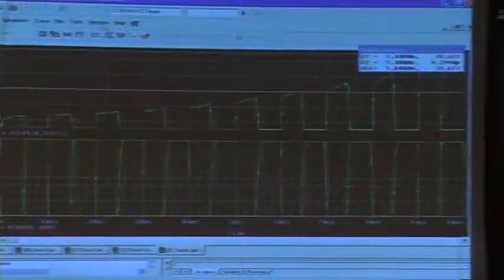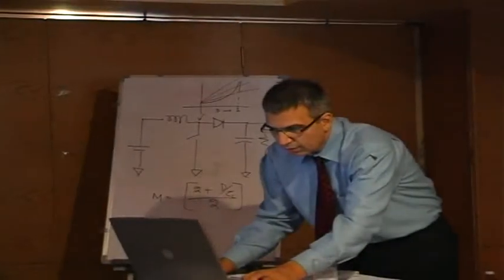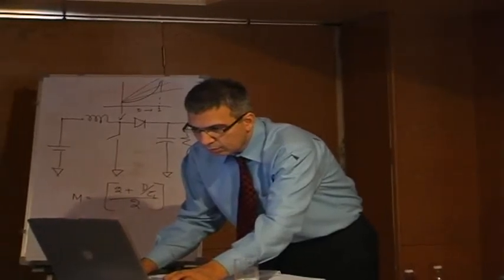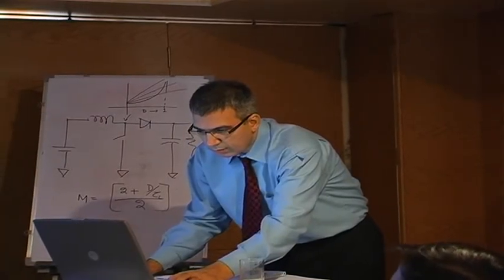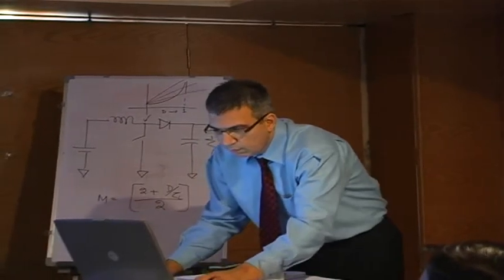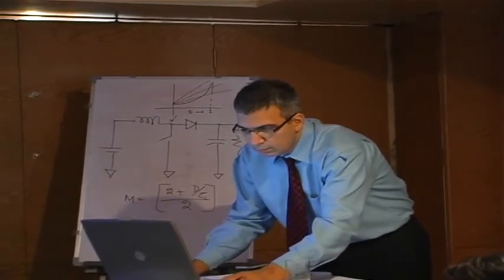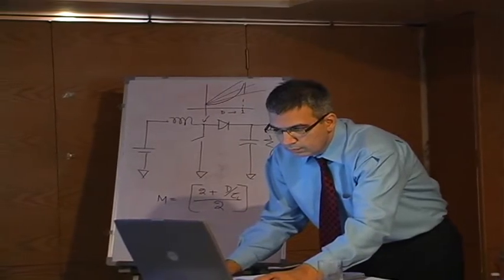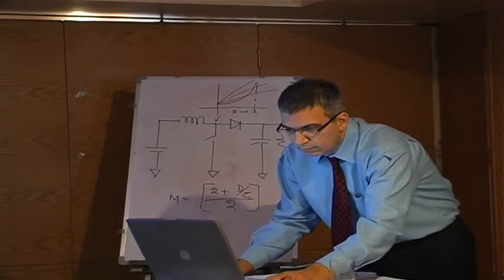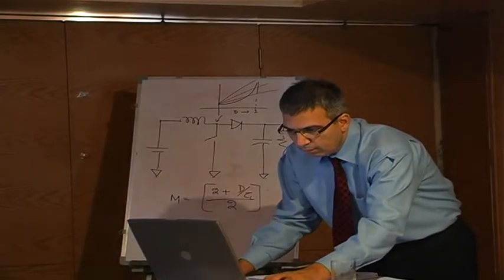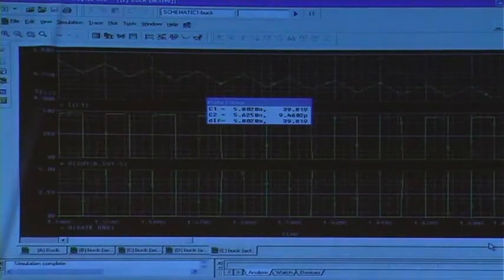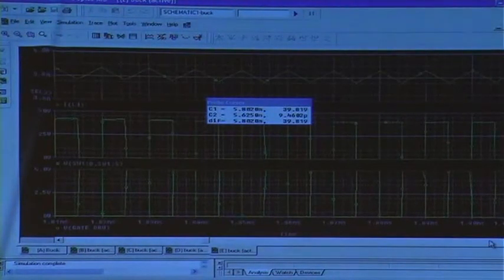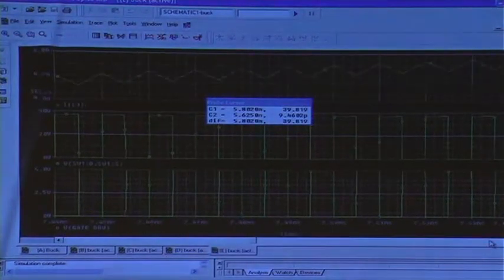Now let's move to the third window and look at the inductor. I guess that's the input current too. This is the steady state — you can see some ripple going on here.